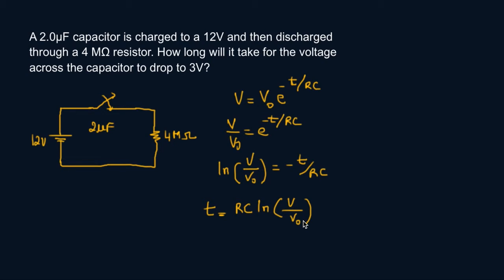Alright so it looks like we have everything that we need. Essentially all we need to do from here on is just plug in our answers. So t equals R is 4 mega ohms. I don't have to write the unit, but when we put it in the calculator we're going to have to take that into consideration.